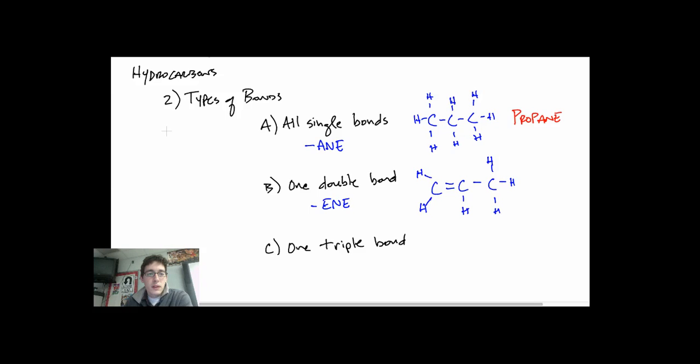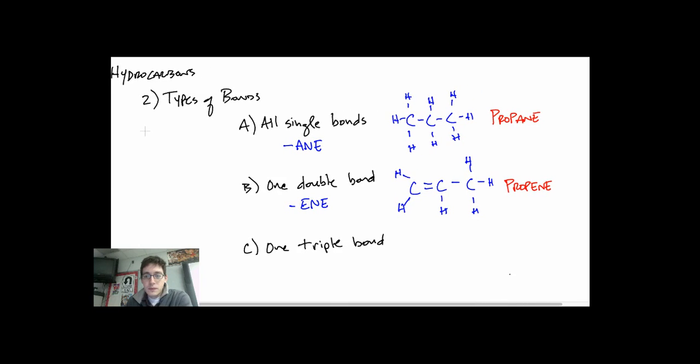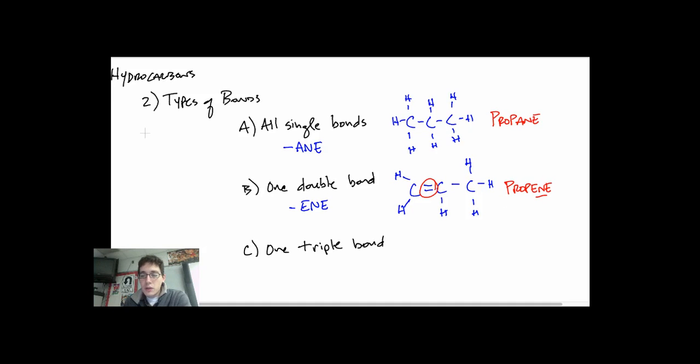We still have a three carbon chain. So it's still the prop prefix. But instead of the ANE ending, this is called propene. This is called propene. And the ENE tells me that I have at least one double bond. If I had two double bonds here, remember, hydrogens would change. But it would still be an ENE, propene molecule.